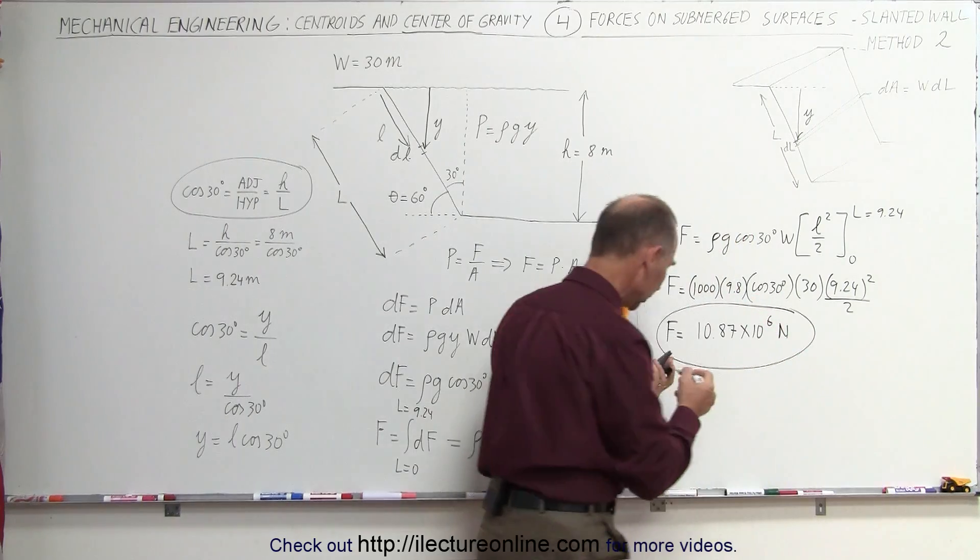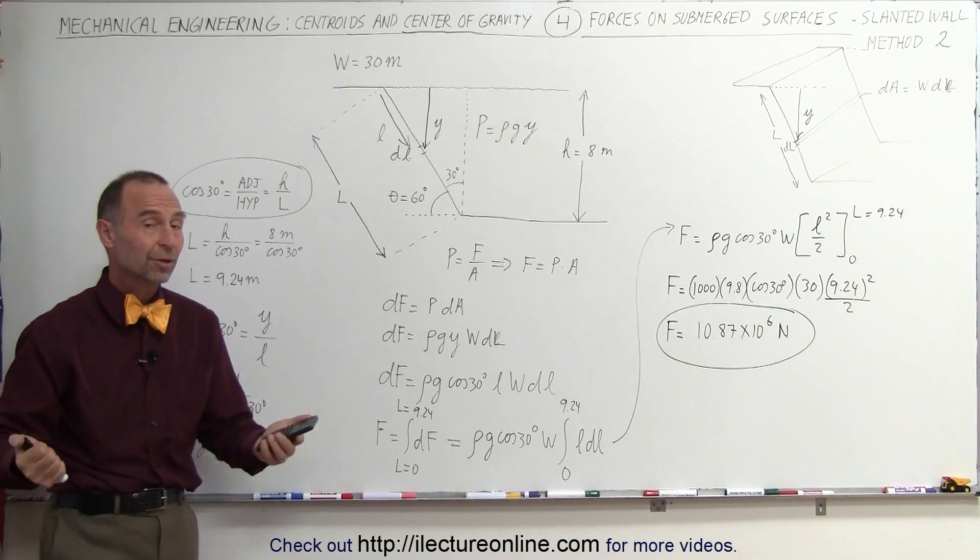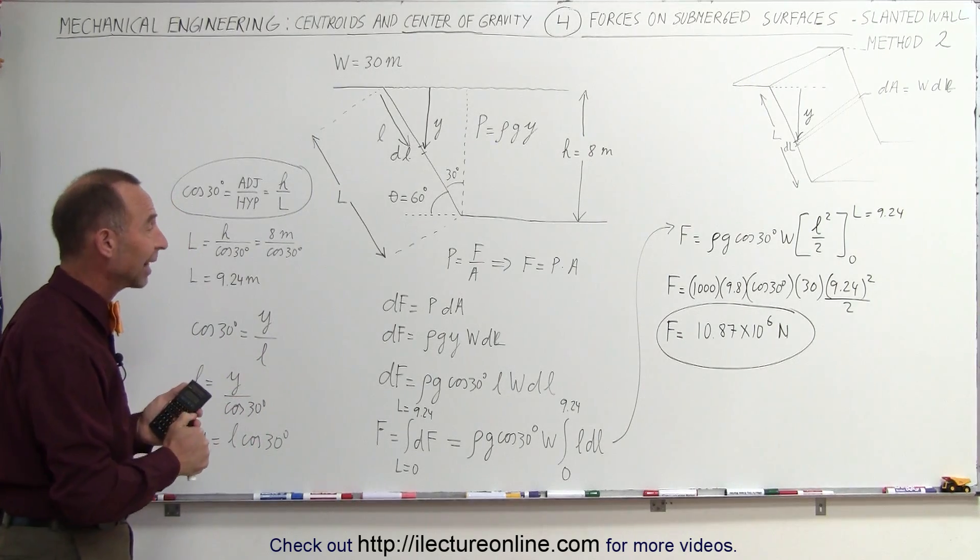So a little bit over 10 million newtons of total force on that segment of the dam. Or if the dam is 30 meters wide on the entire dam, that's a slanted portion.